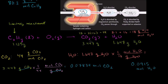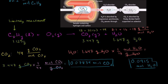So far we've figured out the moles of carbon dioxide and water in our products. All of the carbons and hydrogens in our products had to come from our mystery hydrocarbon — the oxygen had no carbons or hydrogens in it. So if we find the ratio of hydrogens to carbons in our products, we'll know the ratio in our reactants.